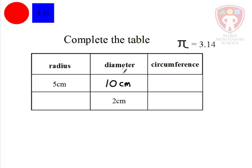If the diameter is 10 centimeters, what will be the circumference? Always write out your formulae. C equals pi times diameter. In this case, C would equal 3.14 times 10 centimeters.